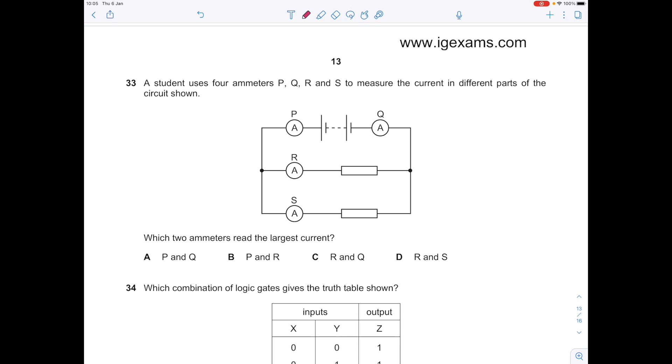A student uses four ammeters P, Q, R, and S to measure the current in different parts of the circuit. Which two ammeters read the largest current? Remember that current is shared in a parallel circuit, so the ammeters closest to the batteries will show the highest reading, which is why P and Q is the answer.